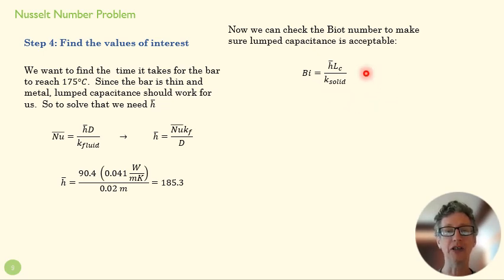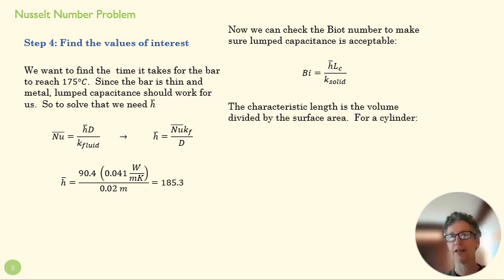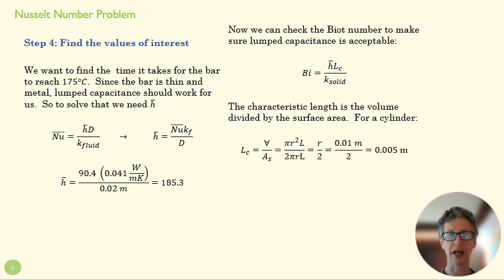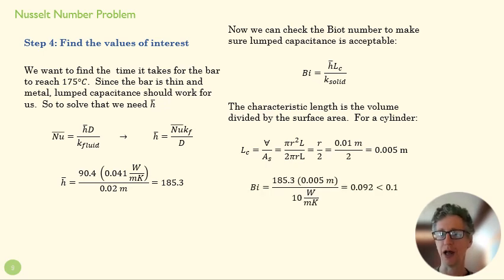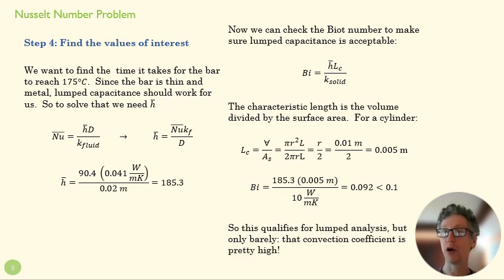And remember this difference: H times the distance over K, H times the distance over K. These look very similar. The Nusselt number has K fluid in it. The Biot number has K solid in it. And then the characteristic length in the Biot has a particular definition. So we calculate that characteristic length, the volume divided by the surface area. So that tells us the kind of average distance from the material to the surface, which is R over 2. And we find that the Biot number is 0.09, which is less than 0.1, and so we're okay. We can use lumped capacitance here.